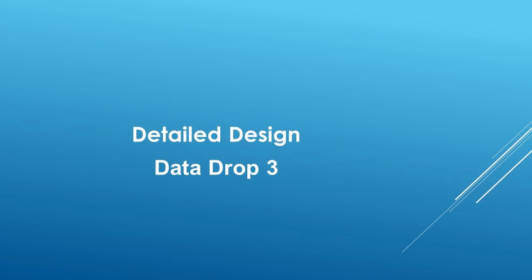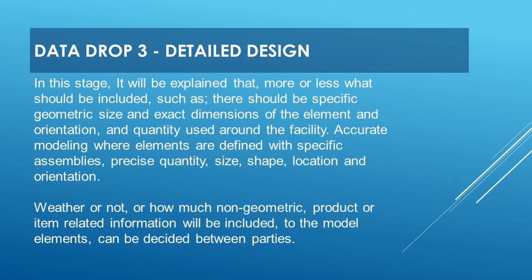Let's look at Data Drop 3 — the detailed design stage. In this stage, what should be included includes: specific geometric size and exact dimensions of the element and orientation, and quantity used around the facility. Accurate modeling where elements are defined with specific assemblies, precise quantity, size, shape, location, and orientation should be the overall scenario. Whether or how much non-geometric product or item related information will be included in the model elements can be decided between parties.